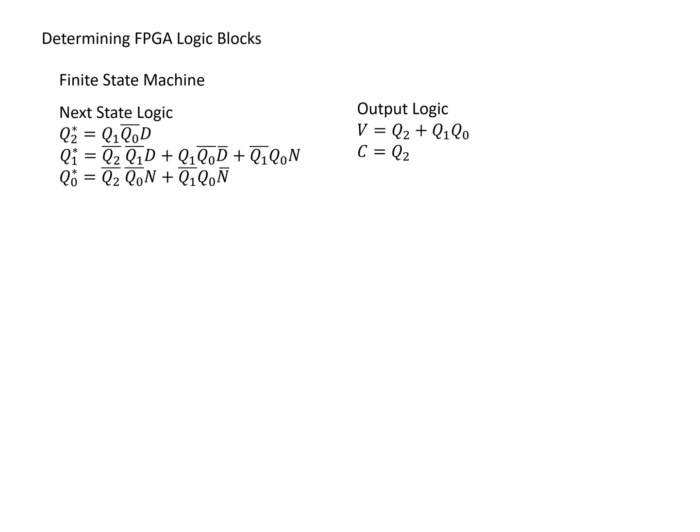This example is going to look at determining the number of logic blocks necessary to implement a particular piece of digital logic in an FPGA. We're going to try to make this example generic enough that the general concepts could be applied to many different families and types of FPGAs, whether they're from Altera, Xilinx, different generations, or whatever the case might be.